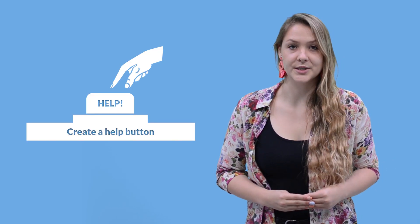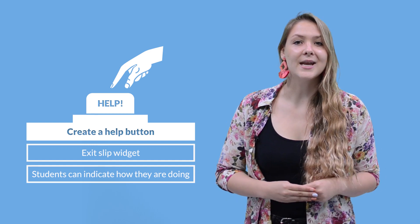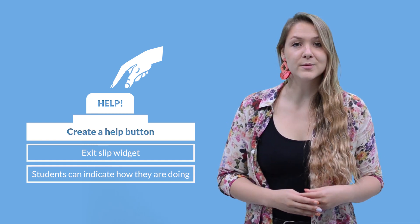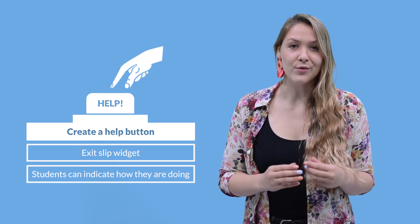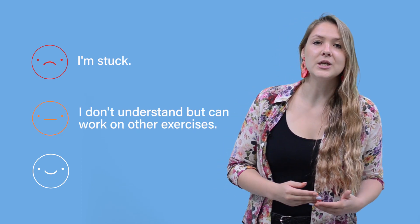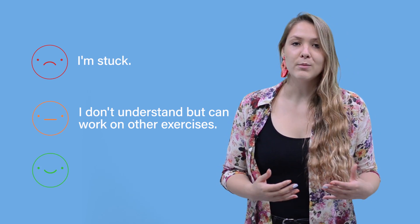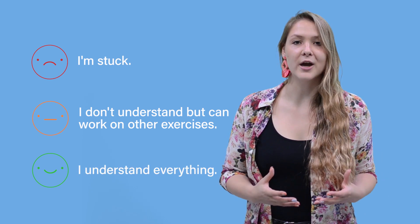You can blur student names to make the survey anonymous by clicking on the eye icon. And the last lesson idea is to create a help button. Use an exit slip widget as a way for students to indicate how they are currently doing in class and to ask for help. They can open this widget at any time during the lesson and click on one of the smiley faces to tell you how they are doing. A sad smiley will show red and it means that the student is stuck and needs your help. A neutral smiley will show orange and here the student doesn't understand a question but can still continue working on other exercises in the assignment. And a happy smiley will show green and means that the student understands everything just fine and can move on.